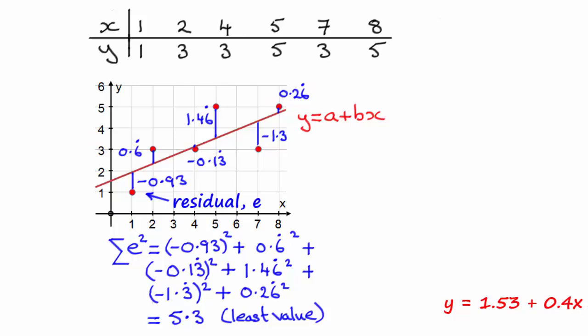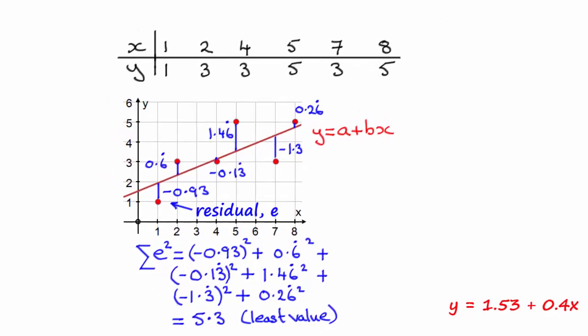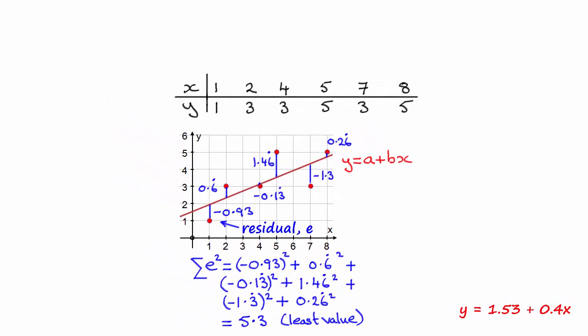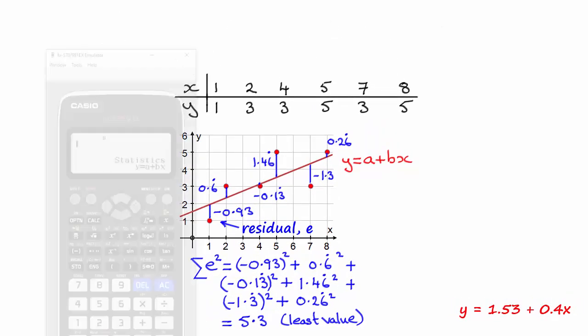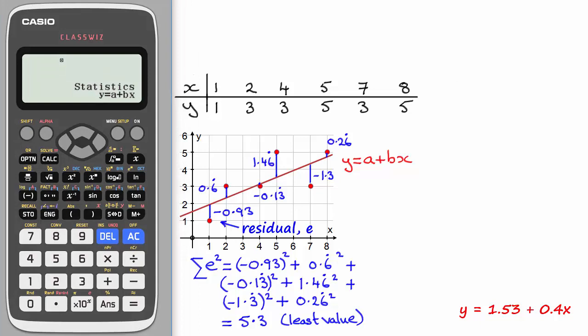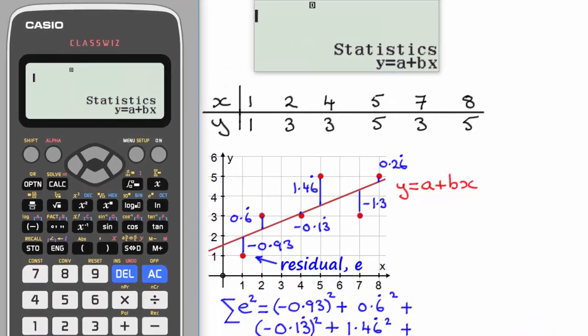Now the purpose of this video is to show you how we can get that equation of the line using a calculator, and I'm going to use the Casio ClassWiz calculator here to demonstrate this. Although if you've got another scientific calculator, it may well have similar functions, but do check out your manual. Now before we start, what I'll do is I'll just display the screen in a larger form so that hopefully you can see it.